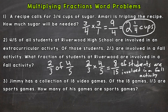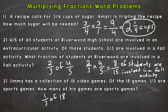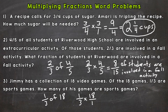Number three is similar to number two, but it involves a whole number and a fraction. Jimmy has a collection of 18 video games. Of the 18 games, one-third are sports games. How many of his games are sports games? Much like number two, we're taking a fraction of something — one-third of his 18 video games. So we can replace 'of' with a multiplication sign. Let's rewrite the problem: one-third times 18, putting that 18 over 1 to give it a numerator and a denominator.